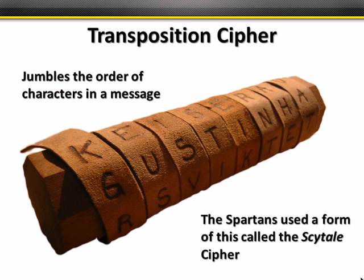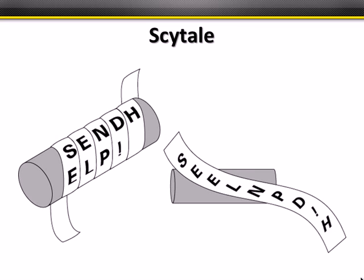Long ago, the Spartans used a device called a scytale — yes, it rhymes with Italy. You wrap a strip of material around a dowel and read across one side; the number of facets on the dowel determines the cipher. When you pull the strip off, the characters are no longer in readable order — they're jumbled. That's the transposition, the diffusion of spreading characters around, that we talked about. For example, 'send help' becomes S-E-E-L-N-P-D exclamation H.